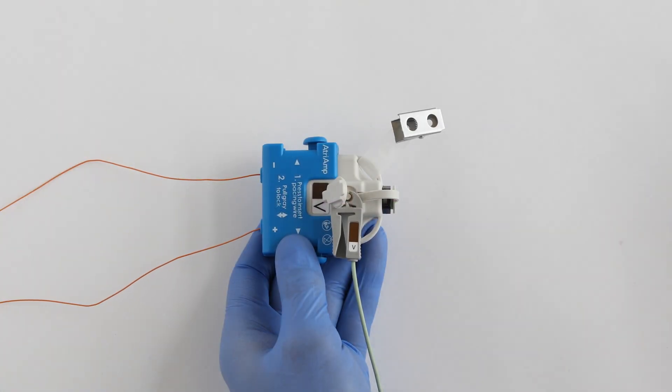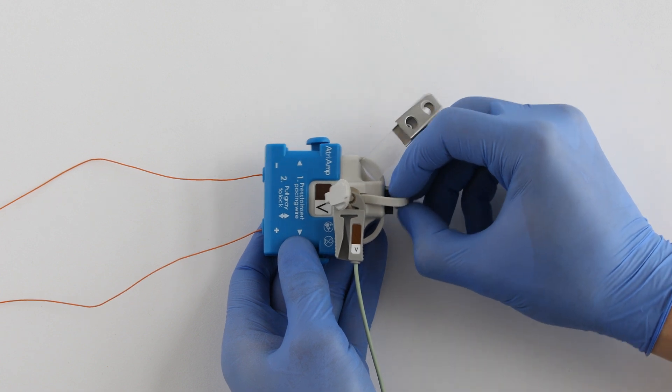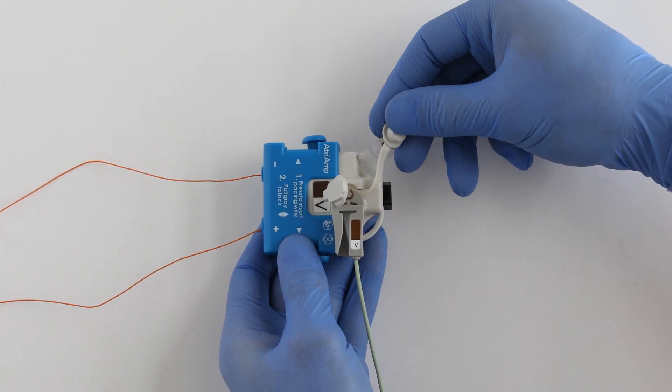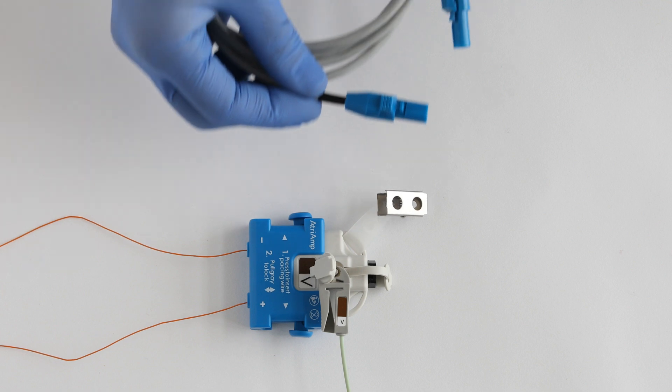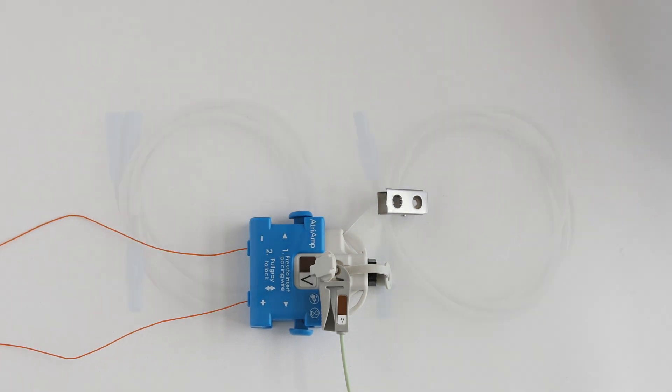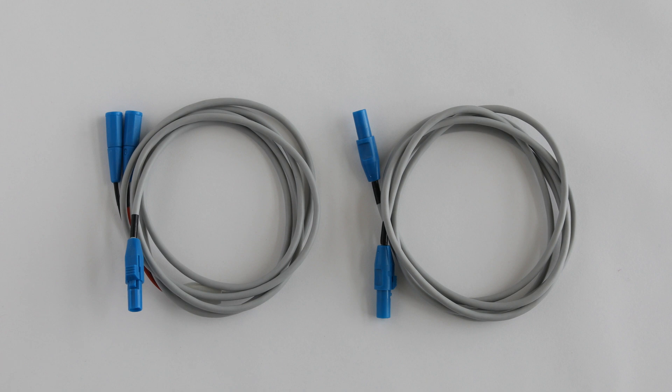When pacing functionality is needed, remove the pacemaker connector plug covering the AtriAmp temporary pacemaker port. Connect the temporary pacing cable to the temporary pacemaker. Atrility provides two different types of pacing cables.